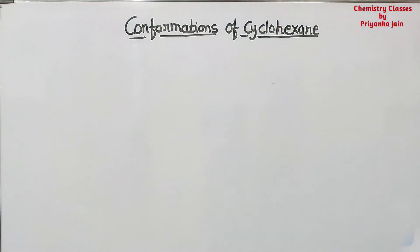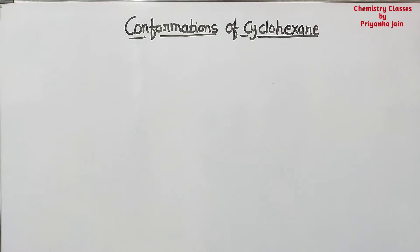Hi students, welcome to chemistry classes. I am Priyanka Jain and we are studying stereochemistry. In our last lecture, we studied the conformations of butane and ethane. Now we have to study the conformations of cyclohexane. Before we start, we should know about some terms — some types of strains.